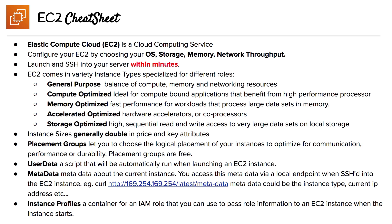User data is a script that will be automatically run when launching the EC2 instance. For metadata, metadata is about the current instance. You can access this metadata via a local endpoint when SSH'd into an EC2 instance, using a curl command with the metadata endpoint. Metadata could include the instance type, current IP address, and so on.